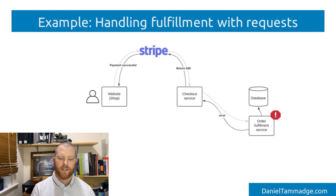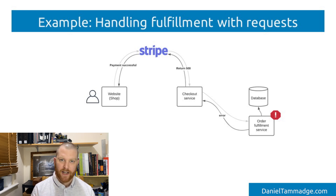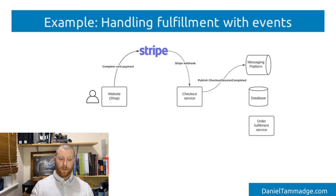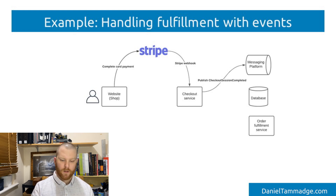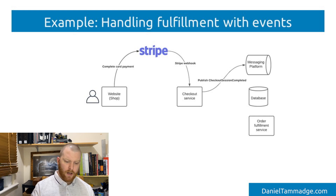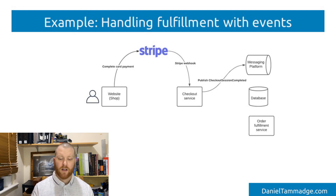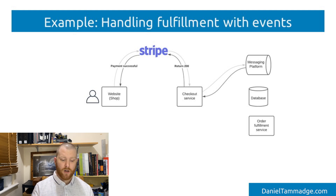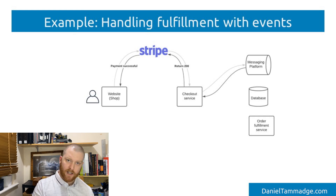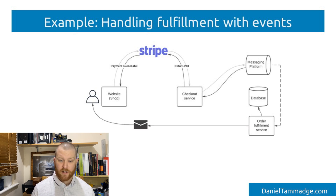This is where we can utilize event-driven architecture and use event notifications. We are going to introduce, in this example, a messaging platform — an event bus — where the checkout service will publish messages to when it receives the event from Stripe. As you can see, it publishes. And once the message has been published successfully, the webhook handler — the checkout service — would then respond back to Stripe that it successfully handled the event. And Stripe would go back to the customer and redirect them. Now the fulfillment service would be subscribing to the events, and once an event exists, it would then consume and process that event.